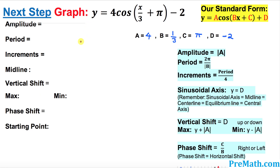Our next step is to find the amplitude. On the right hand side you can see all the formulas we will be following to get the amplitude and so on. We have a equals to four, b equals to one over three, c equals to pi, and d equals to negative two. Based on that, our amplitude is the absolute value of a, which is the absolute value of four, which equals four.